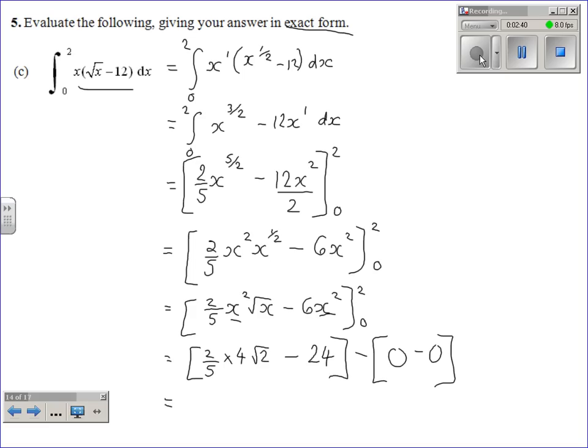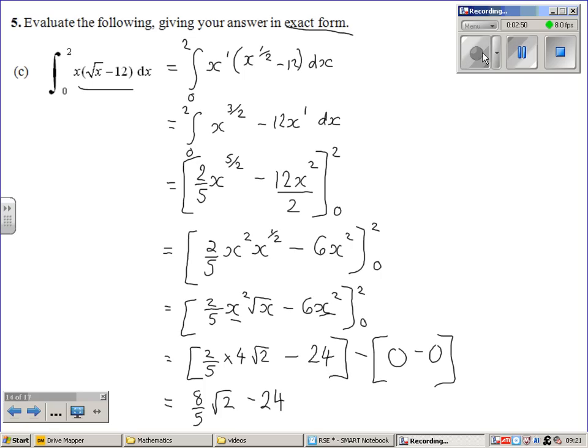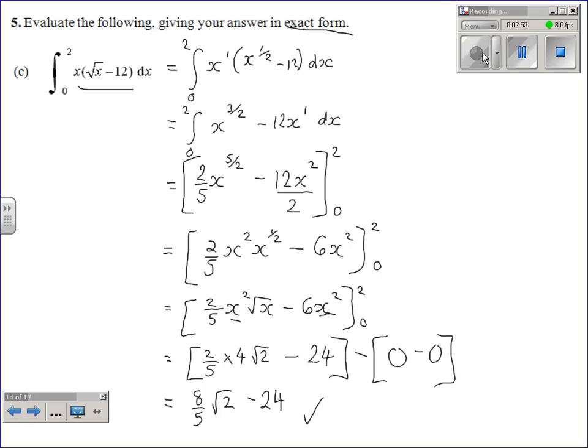2 times 4 is 8, so we've got 8 fifths root 2, minus 24, take away 0. At that point we're done.